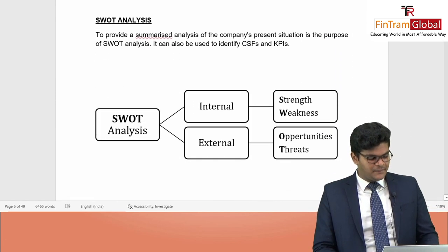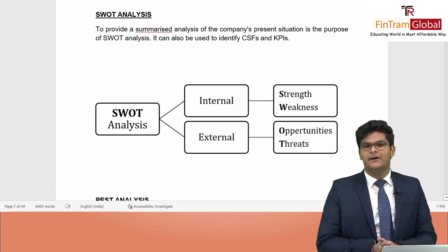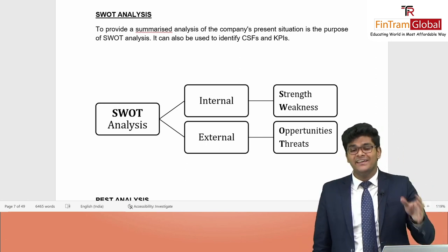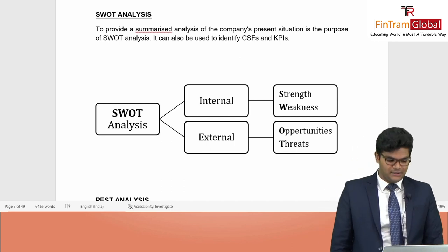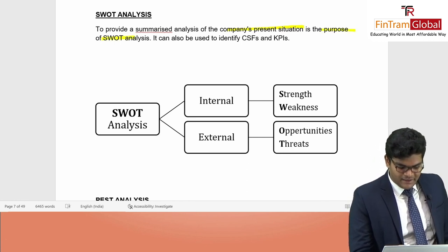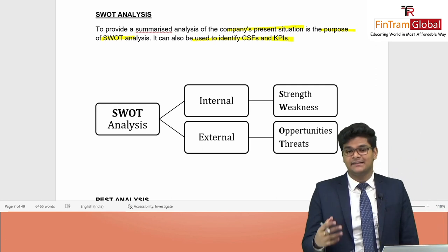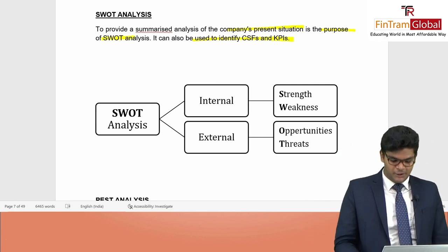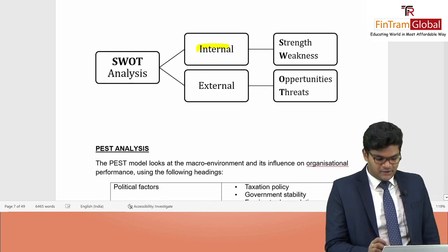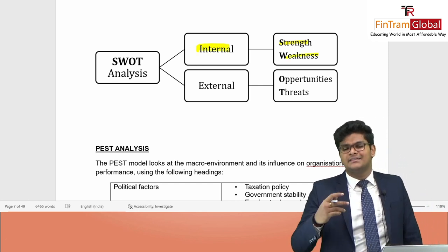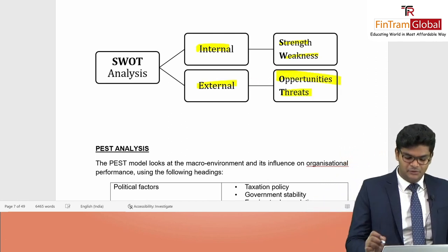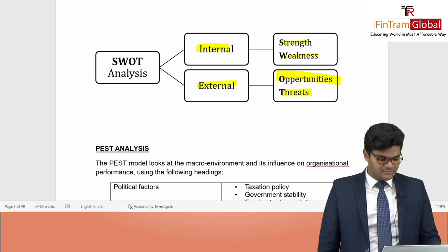SWOT analysis looks at Strengths, Weaknesses, Opportunities, and Threats to provide a summarized analysis of the company's present situation. It can also be used to identify critical success factors (CSFs) and KPIs. Strengths and weaknesses are internal aspects, while opportunities and threats are found in the external environment.